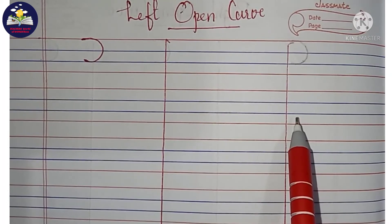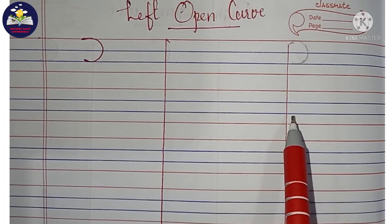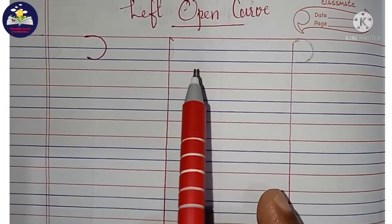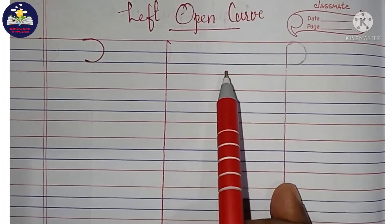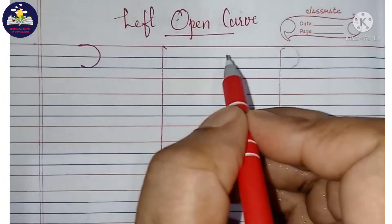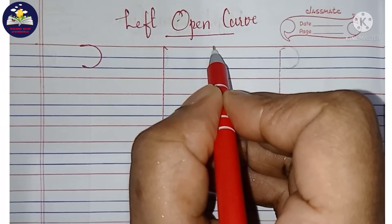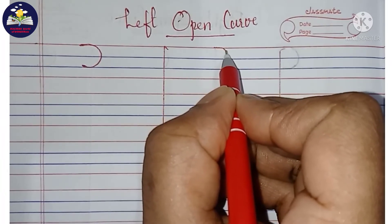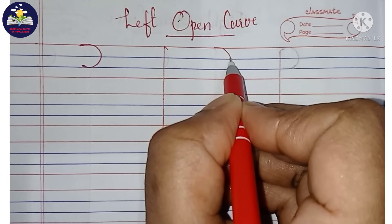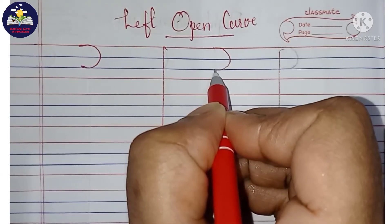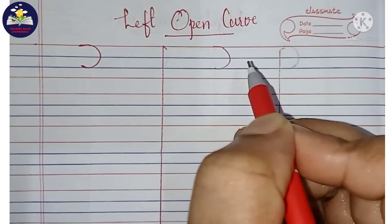Children, now I am showing how to write left open curve in the four-line notebook. Start from the top line, make a left open curve moving towards the right, touching the third line.